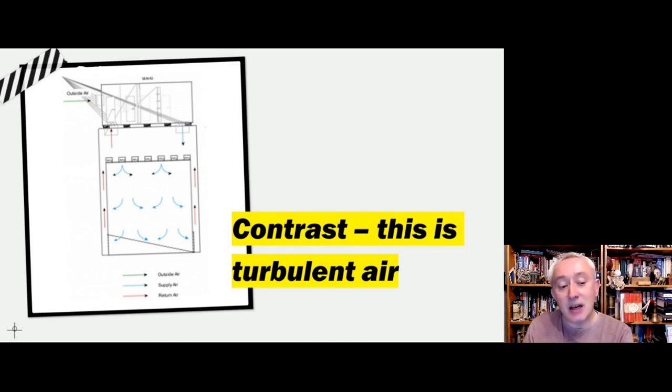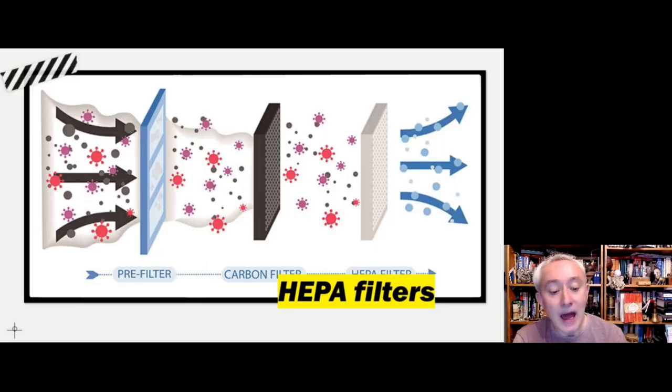So this is great for maintaining contamination control where there's people in the surrounding room, but within the aseptic core, within the grade A or ISO class 5 area, we want to achieve unidirectional airflow, and this is provided through HEPA filters.